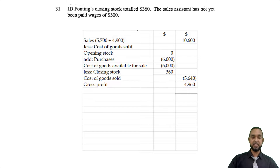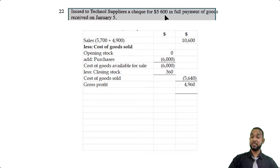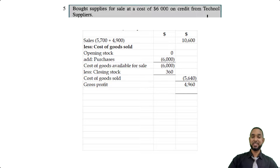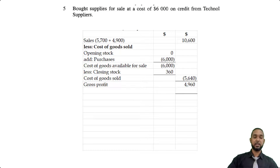$5,640 subtracted from the sales figure of $10,600 gives a gross profit of $4,960. There was also one revenue item: the discount received. On the 22nd we paid Technol Suppliers $5,600, but the purchase value was $6,000 — we could fully settle because we received a discount of $400. Discounts received are classified as revenue. Adding those together gives us $5,360.